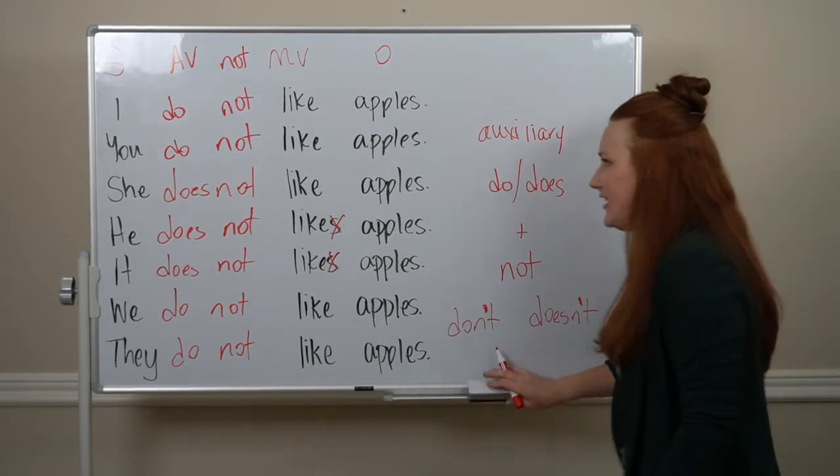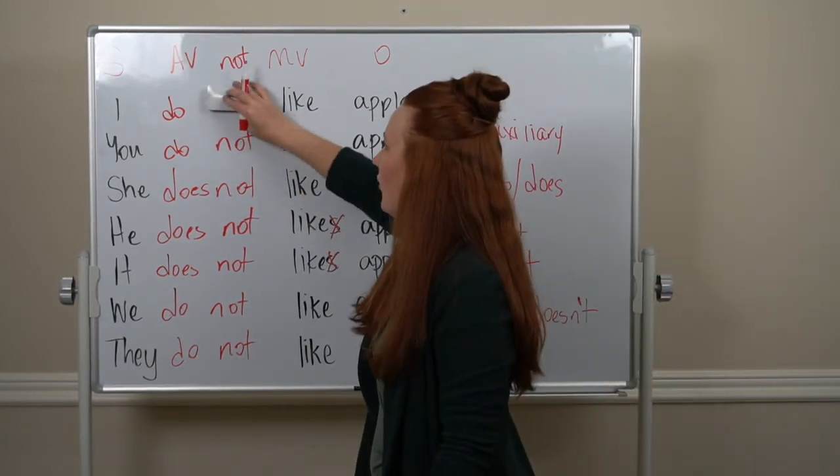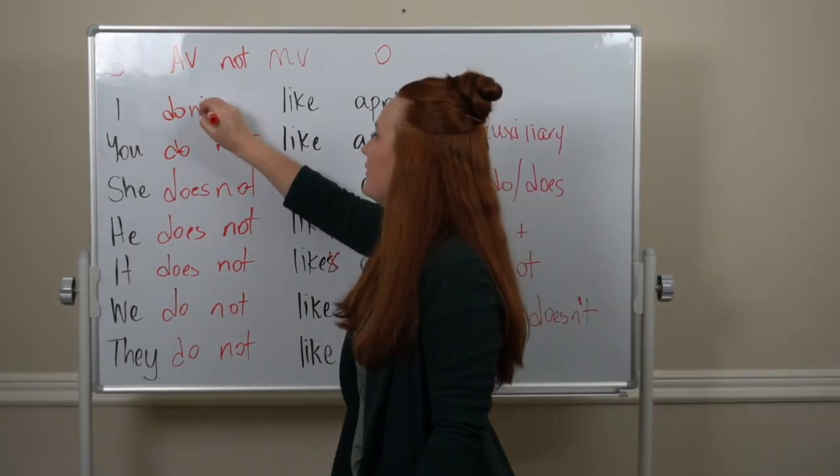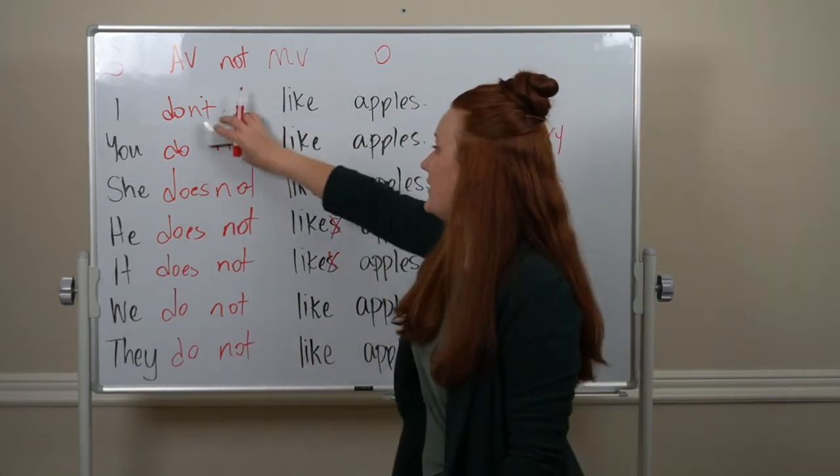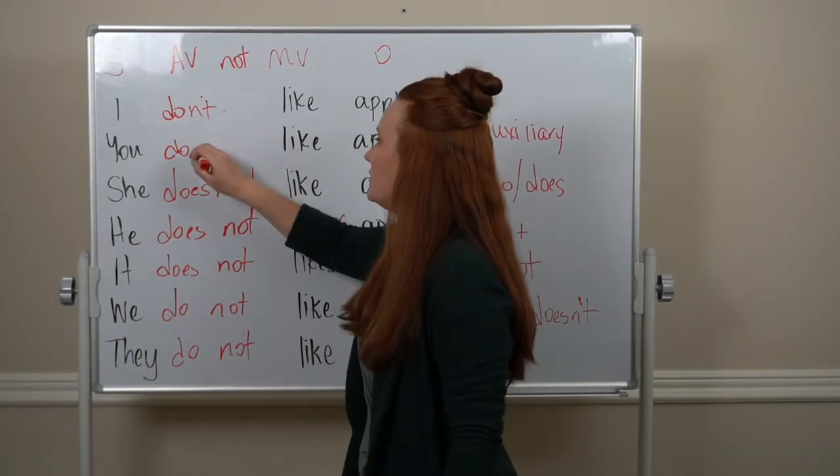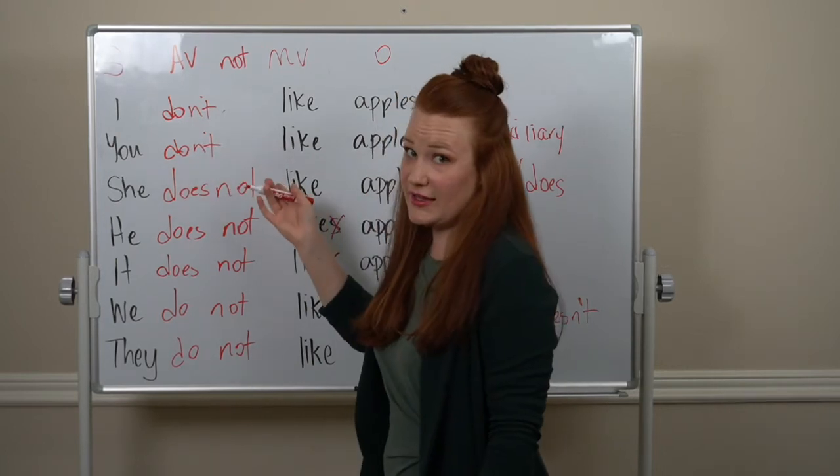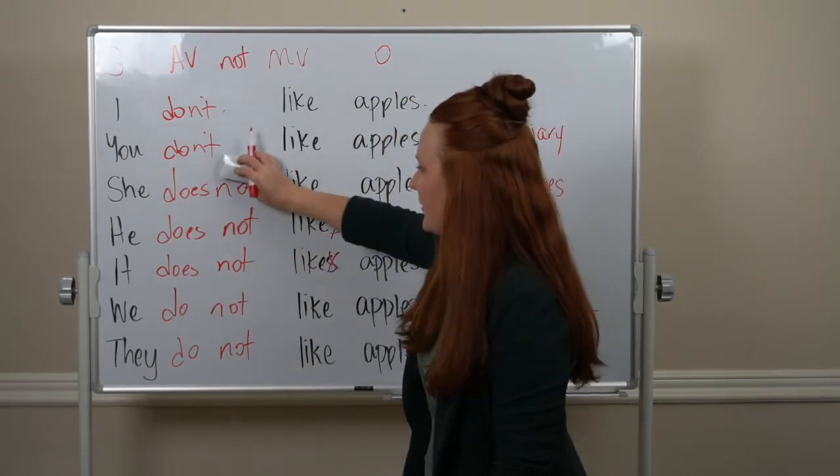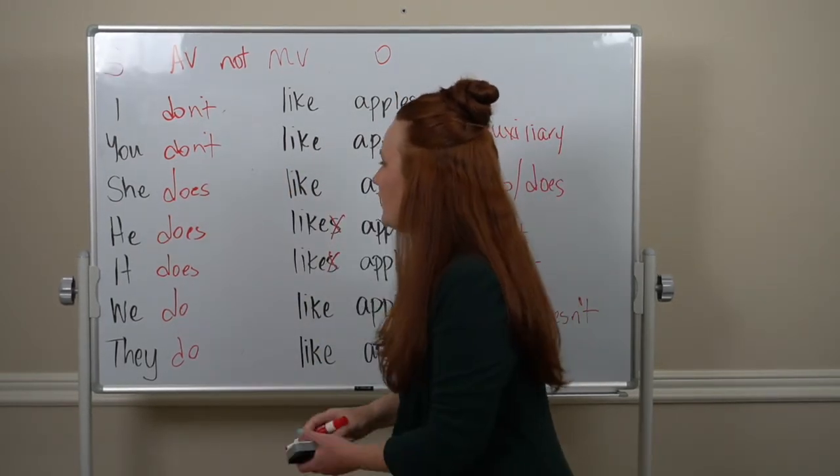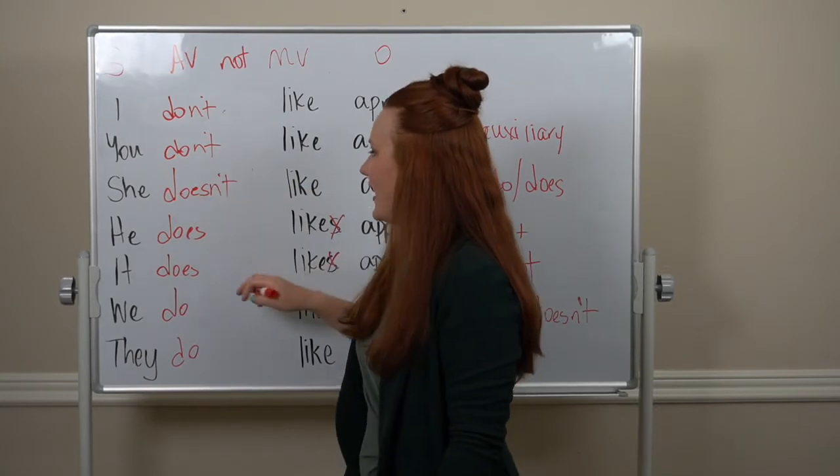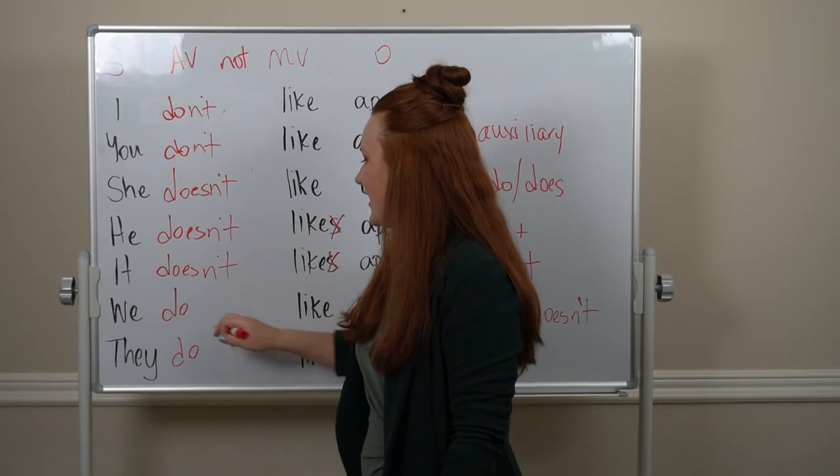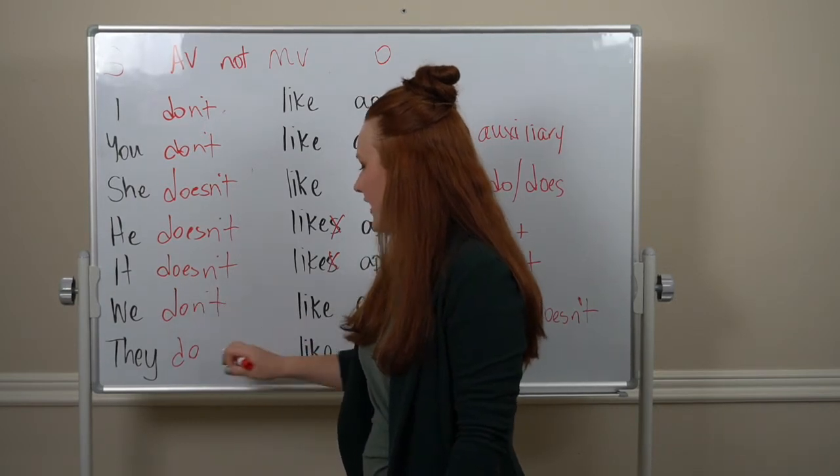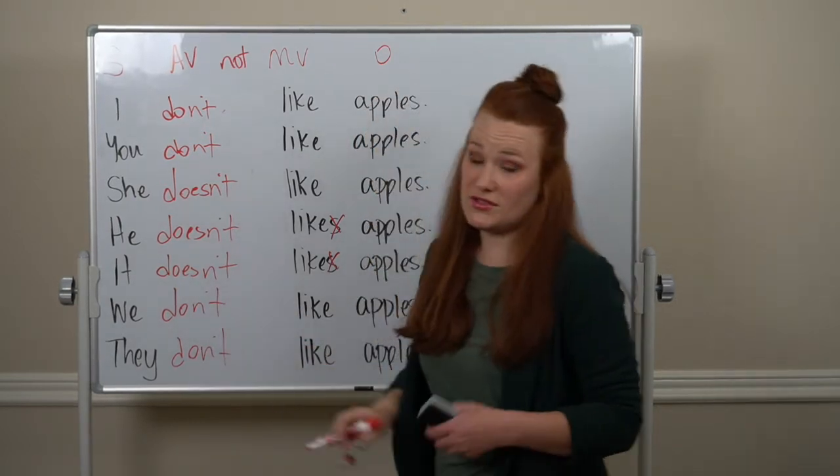So, I do not like apples, or I don't like apples. You do not like apples. You don't like apples. And same all the way down. She doesn't like apples. He doesn't like apples. It doesn't like apples. We don't like apples. They don't like apples.